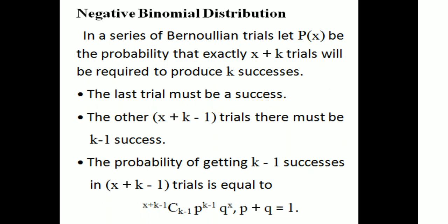The last trial is a success. The other X plus K minus 1 trials must contain K minus 1 successes. The probability of getting K minus 1 successes in X plus K minus 1 trials is: C(X+K-1, K-1) × P^(K-1) × Q^X.